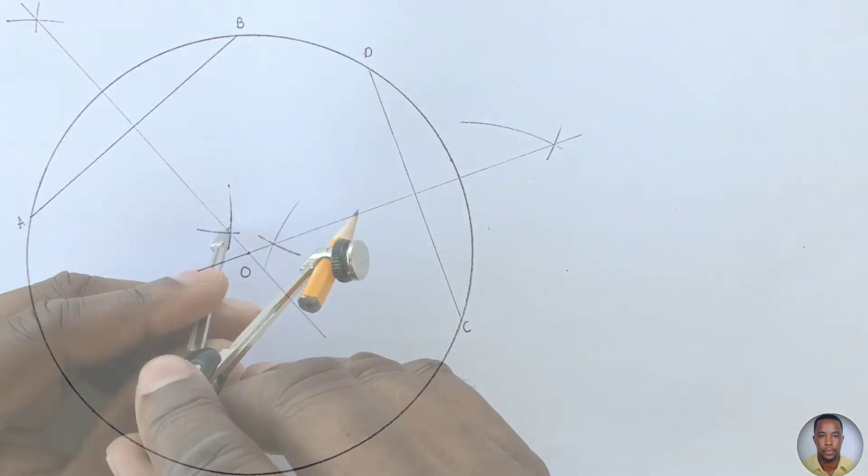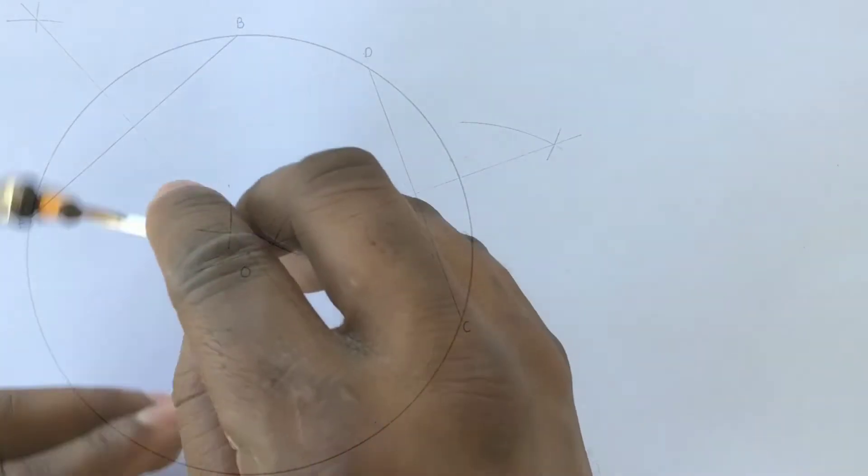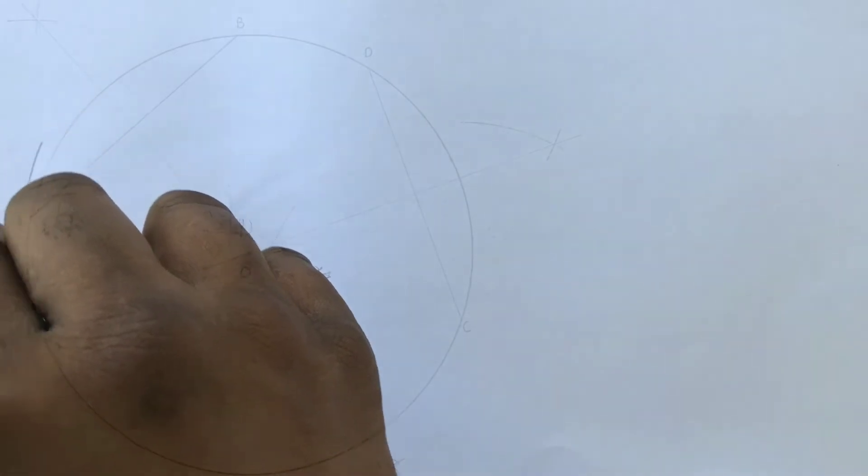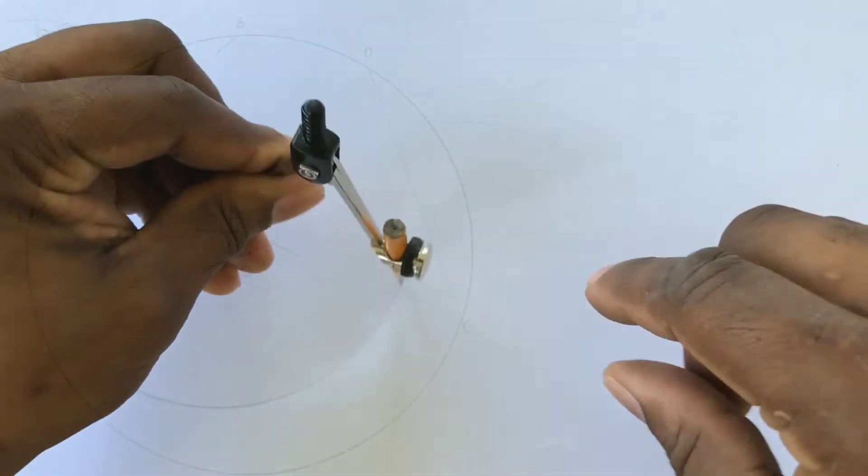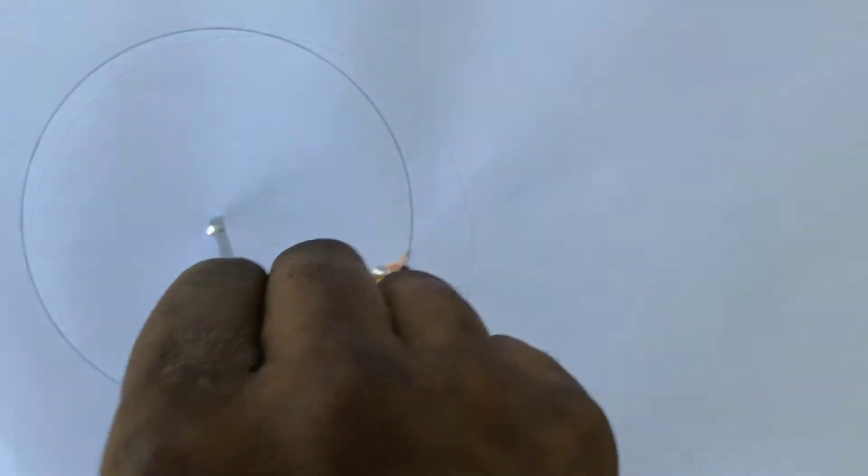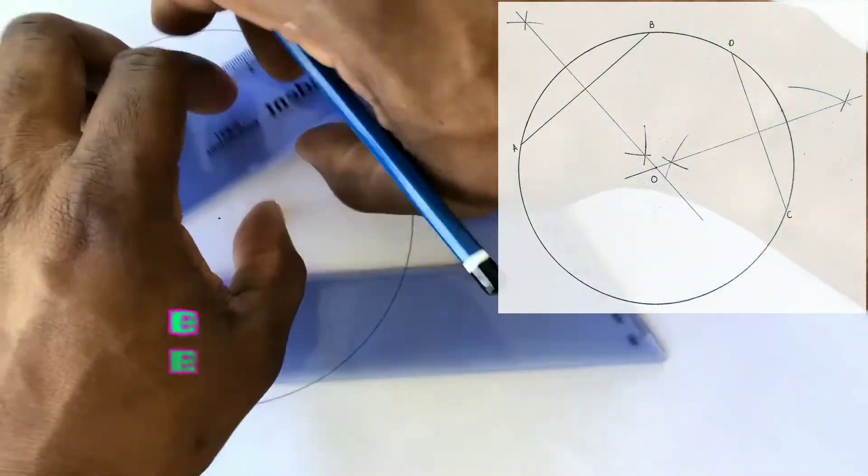Use your compass and draw a random circle of your choice. Now use your set square and draw two chords to the circle that are not parallel to each other.